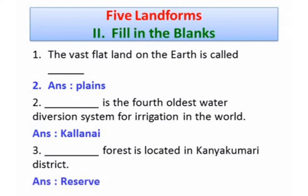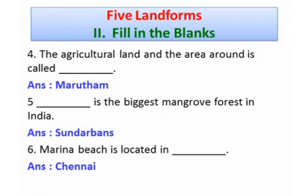Roman number two — fill in the blanks. The vast flat land on the earth is called Plains — P-L-A-I-N-S. The fourth oldest water diversion system for irrigation in the world is Kallanai — K-A-L-L-A-N-A-I. Dash forest is located in Kanyakumari district: Reserve Forest — R-E-S-E-R-V-E. The agricultural land and the area around it is called Marudam — M-A-R-U-T-H-A-M. The biggest mangrove forest in India is Sundarbans — S-U-N-D-A-R-B-A-N-S. Marina Beach is located in Chennai — C-H-E-N-N-A-I.